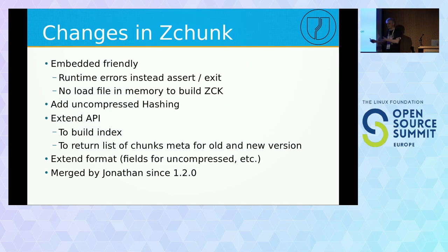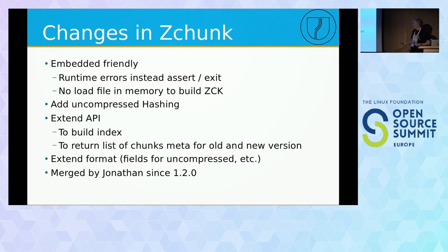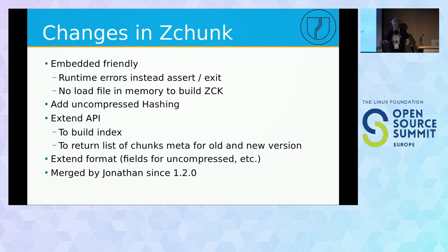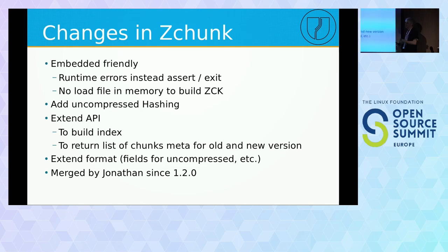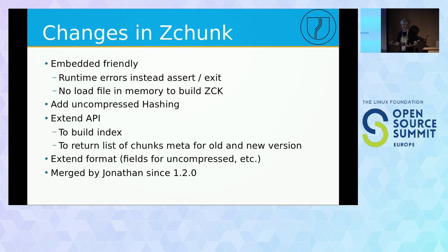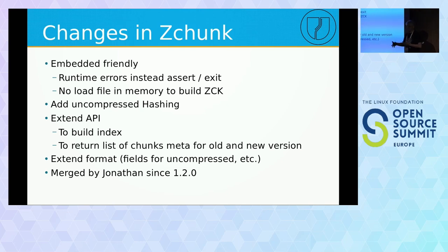The ZChunk format is a header followed by a list of chunks, with meta information including an index. For each chunk there are hashes for both the compressed and uncompressed chunk. Key changes I made: SW Update cannot exit on errors — it should report runtime errors for evaluation; and ZChunk only hashed compressed chunks, but on the device I have the root filesystem uncompressed, so I added meta information for uncompressed data and extended the API to make the library callable from SW Update. After several iterations, Jonathan was very kind and merged everything into ZChunk mainline.